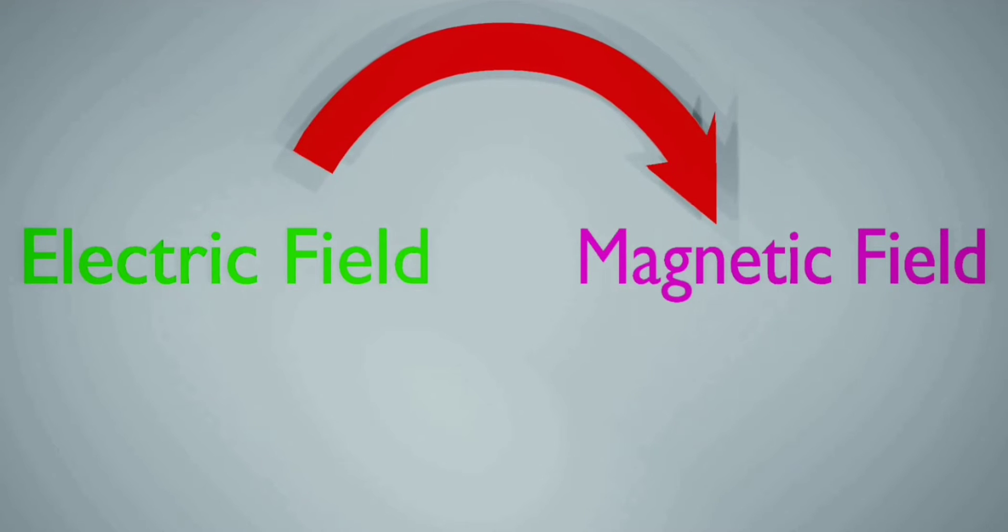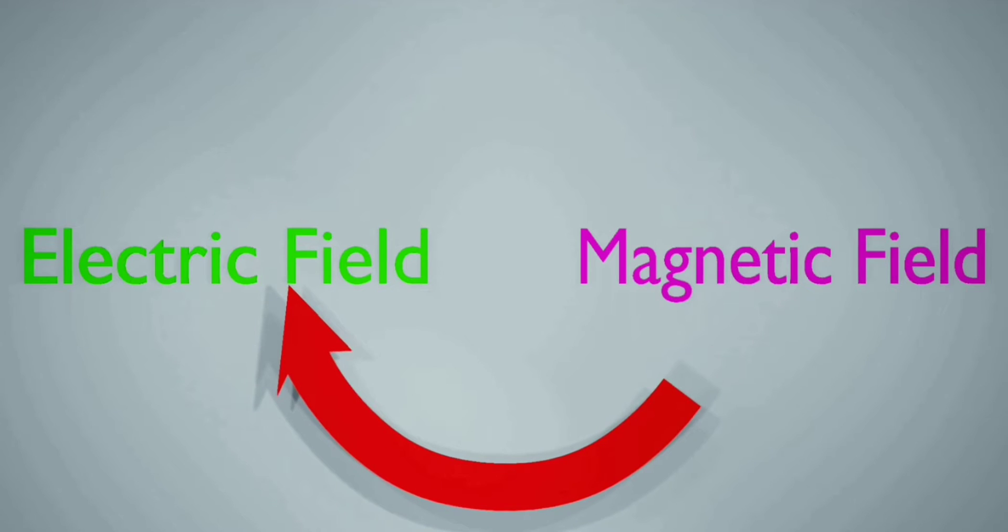Magnetism can create electric effects. When a magnet moves with respect to an electrical wire, it generates a temporary electric field in this wire.